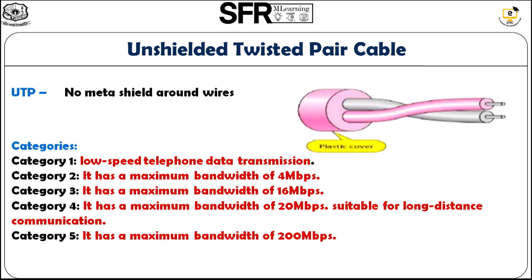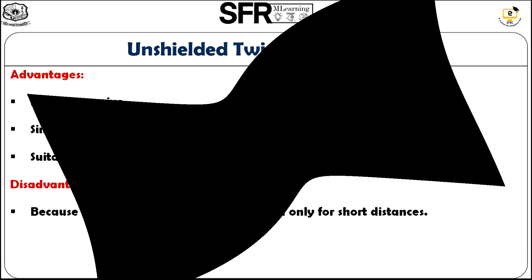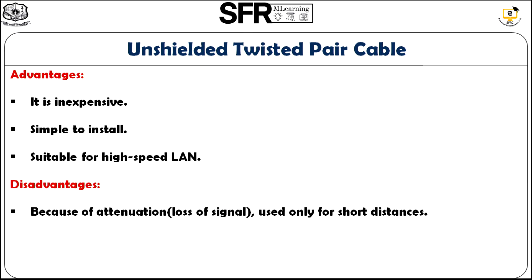Category 1 is used for low speed telephone data transmission. Category 2 has a maximum bandwidth of 4 Mbps, Category 3 has 16 Mbps, and Category 4 has 20 Mbps. Category 4 is mostly suitable for long distance communication. Among all five, Category 5 has a maximum bandwidth of up to 200 Mbps. The advantages of UTP are that it is inexpensive and simple to install, and mostly suitable for high speed LAN networks. The disadvantage is that it can only be used for short distances, because over long distances attenuation — that is, loss of signal — may occur.